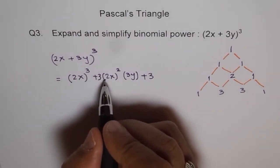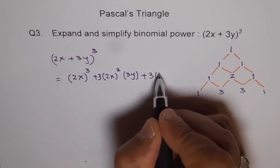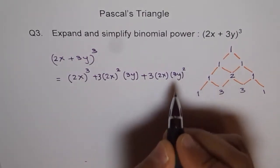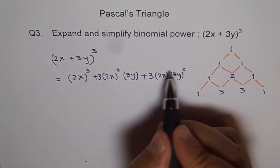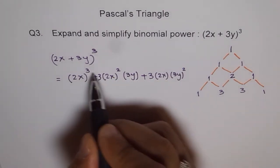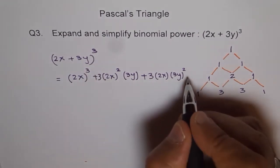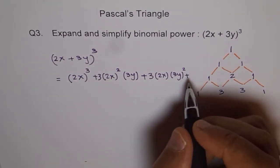Then plus 3 is the coefficient for the third term. And now the exponent of 2x is just 1, but that of 3y is 2. You will appreciate that 2 plus 1 is 3, 2 plus 1 is 3, and this is 3. So their sum is always 3.